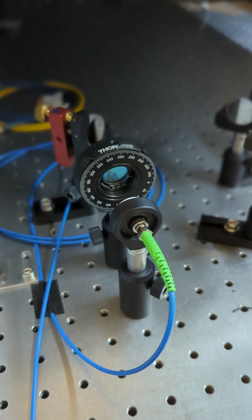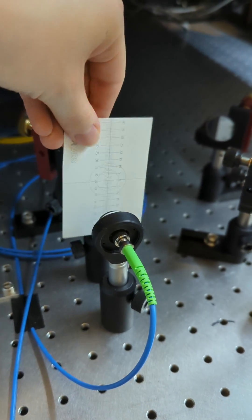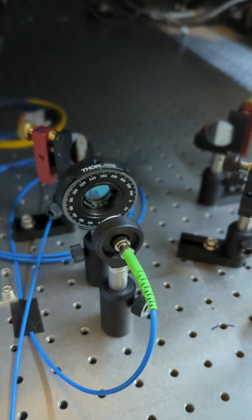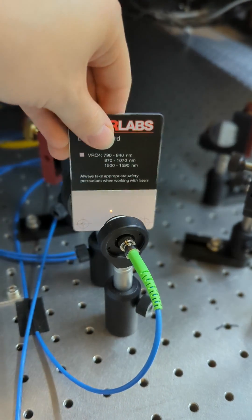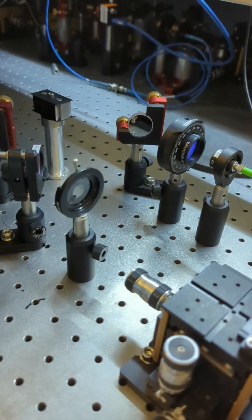Now the lasers are on but if I use a white card and hold it into the setup I can't see anything. I need to use a special fluorescent card in order to make the light visible because it is not visible for our human eye.